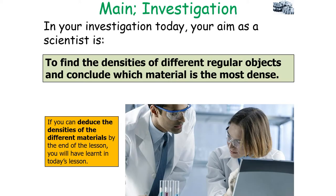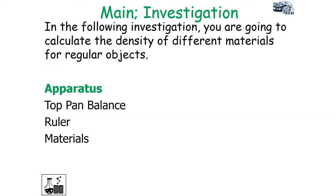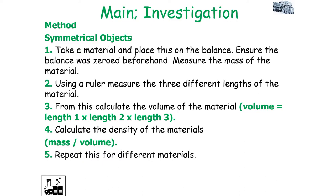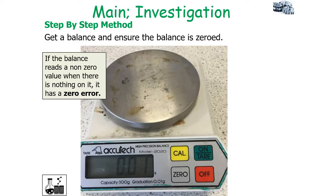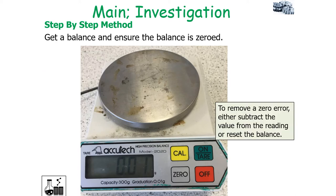To find the density of different regular objects, you carry out the following investigation using a top-pan balance, a ruler, and materials. Place the material on the balance, ensure the balance was zeroed beforehand, and measure the mass of the material. Then using a ruler, measure the three different dimensions of the material and calculate the volume with your mathematical equation. If the balance reads a non-zero value with nothing on it, it has a zero error — a systematic error — so subtract the value from the reading or reset the balance.